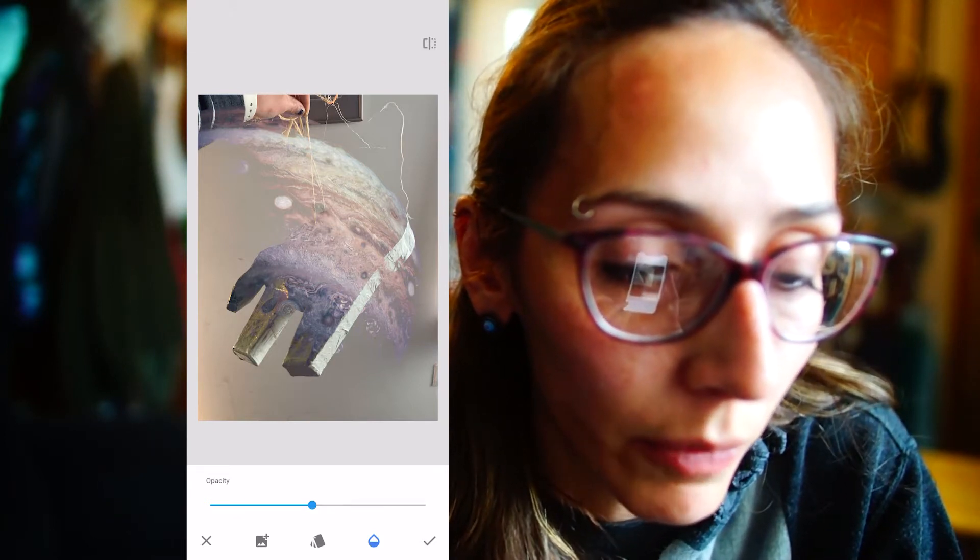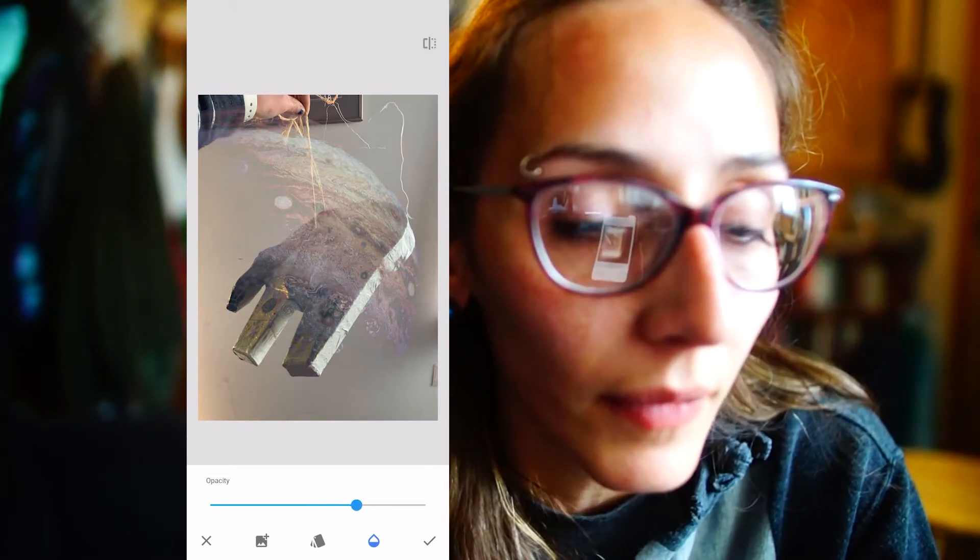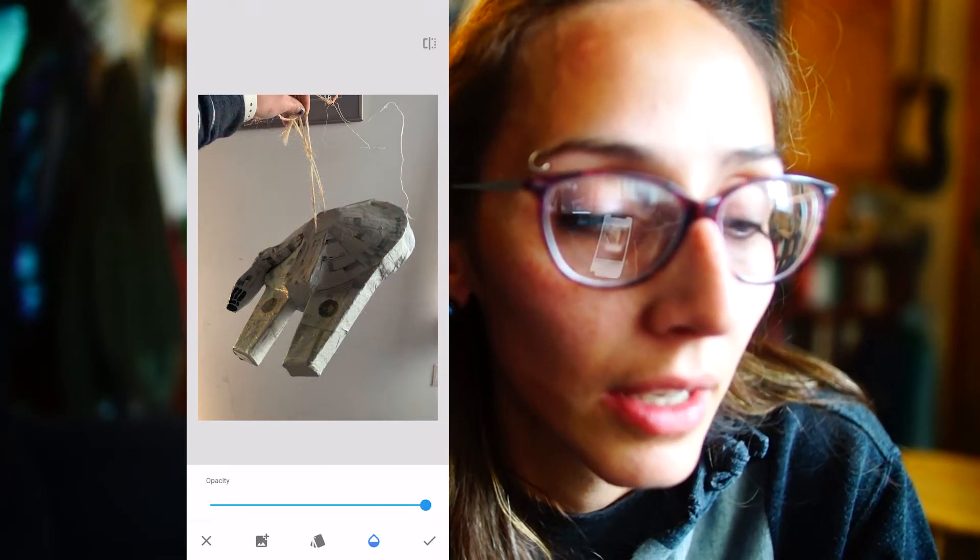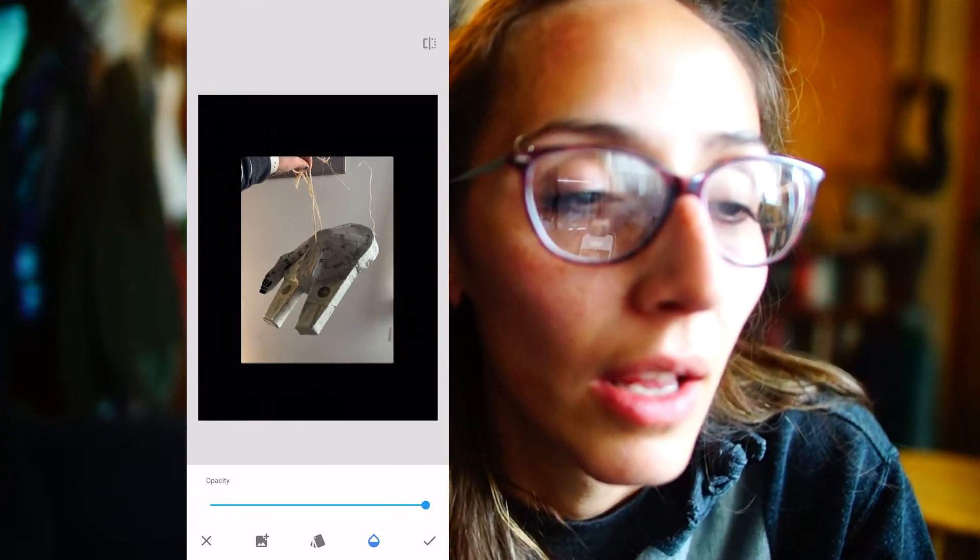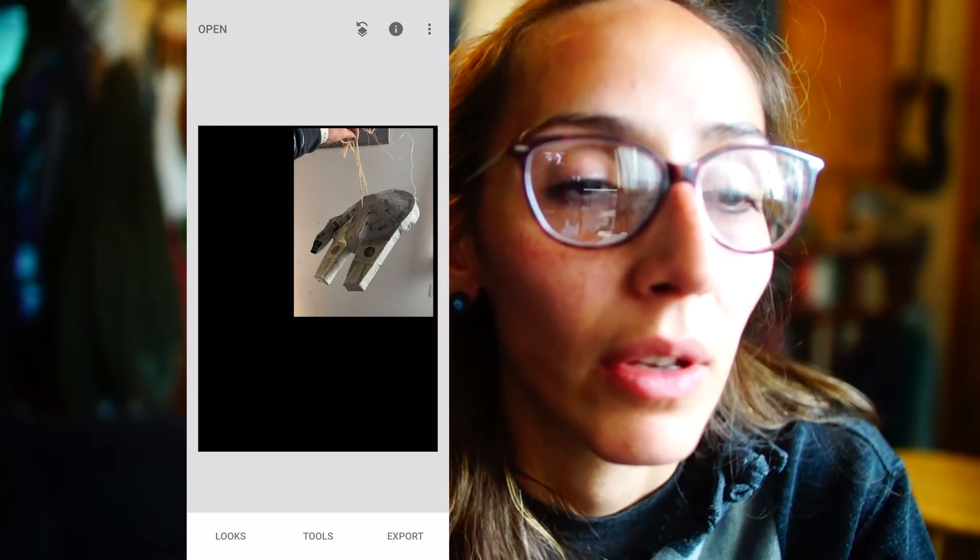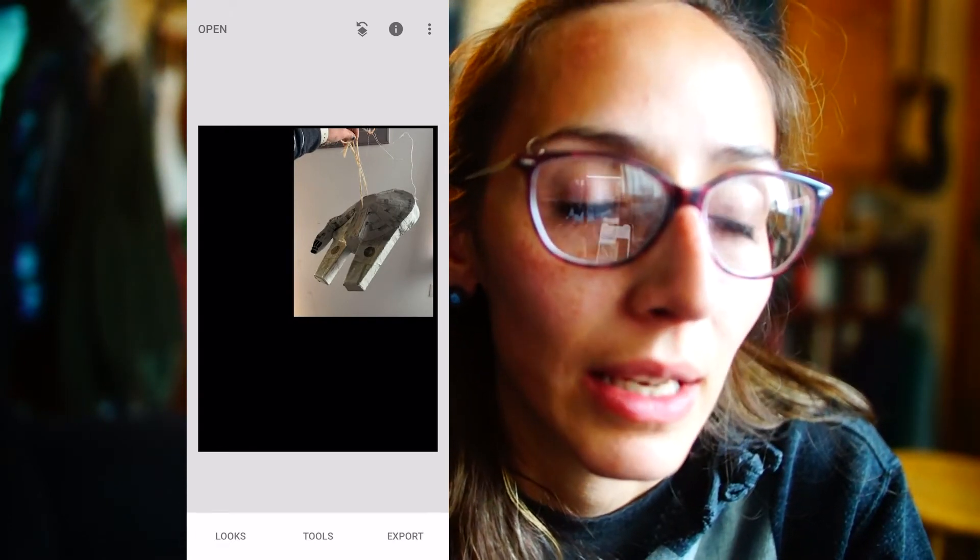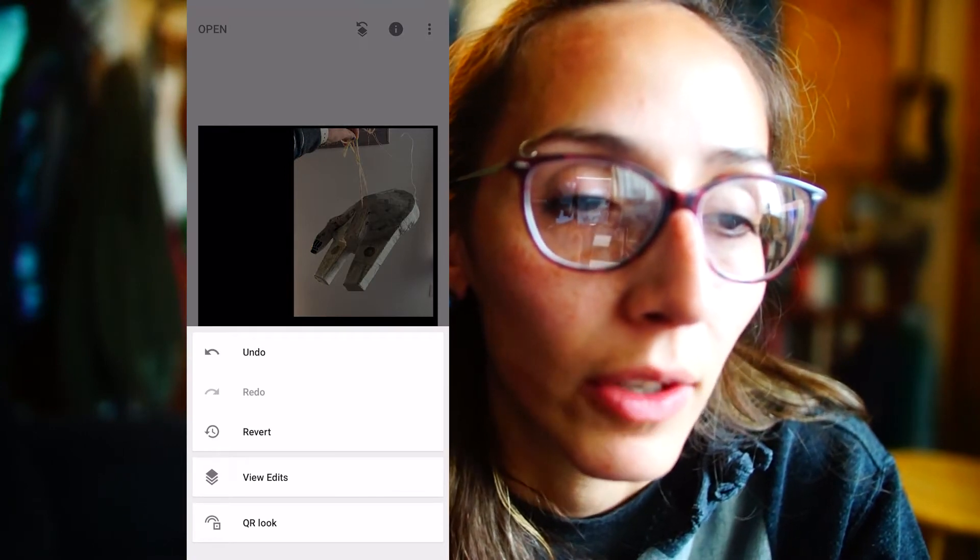So I'll go to this little symbol in the upper right that has two layered squares with an arrow pointing left. Looks like an undo button, and it is in fact an undo button, but under that you should see an option that says view edits.